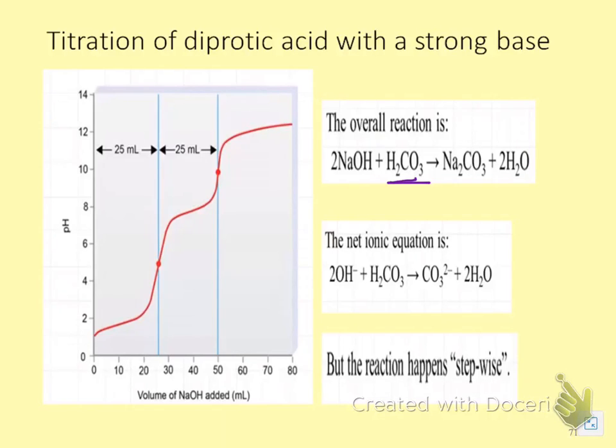If I write the full reaction, I need two sodium hydroxides for every one carbonic acid. And even if I write the net ionic, I still need two. But the reaction doesn't happen this way. It doesn't happen where I lose both protons at one time. It happens stepwise.